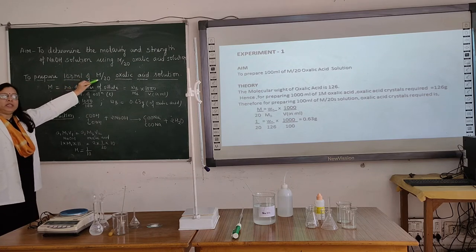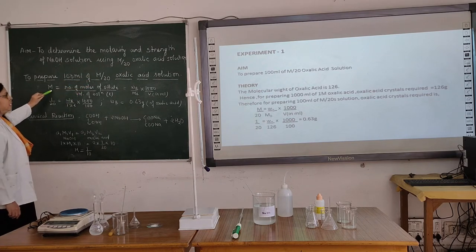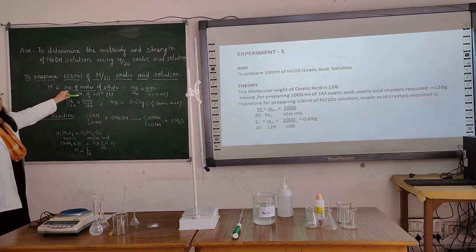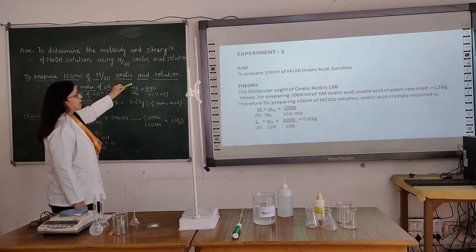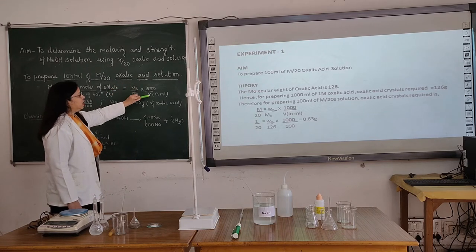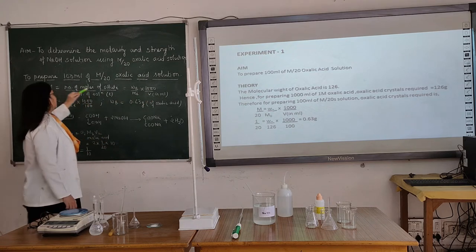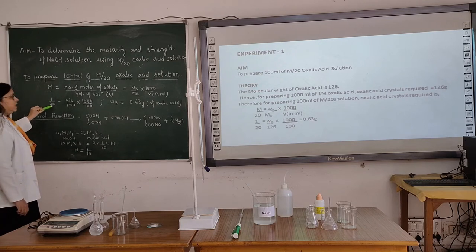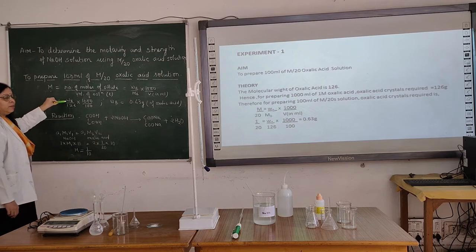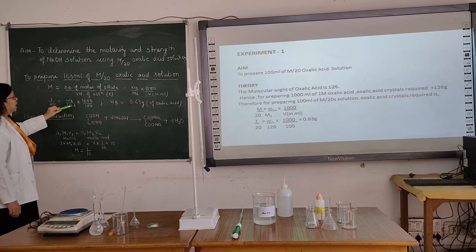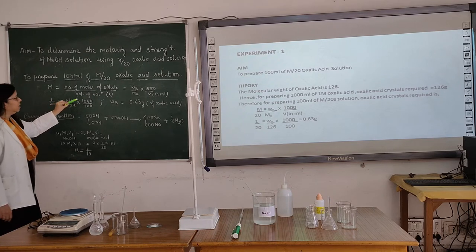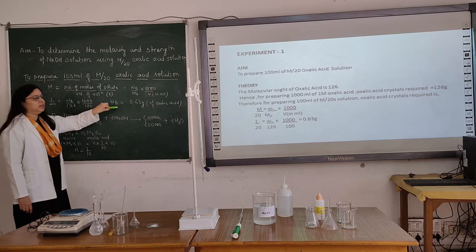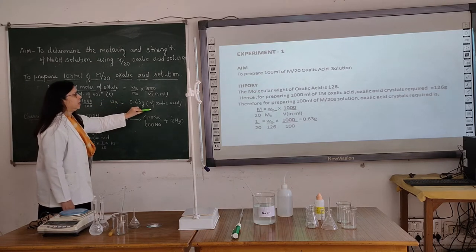How to prepare N/20 oxalic acid solution? Molarity is the number of moles of solute per unit volume of solution in litres. Number of moles of solute can also be written as WB by MB into 1000 by V, where V is taken in ml. We are preparing N/20 oxalic acid solution, so molarity is written as 1/20. WB is the amount to be weighed of oxalic acid, and 126 is the molar mass of oxalic acid. Since we are preparing only 100 ml, it is divided by 1000. So finally we get the weight, that is 0.63 grams of oxalic acid.